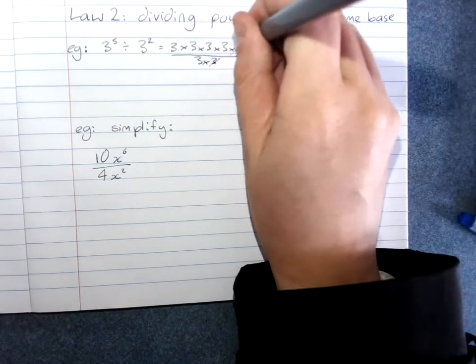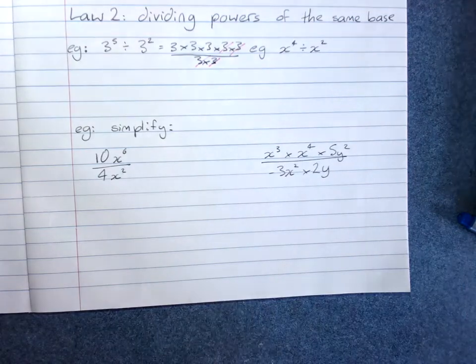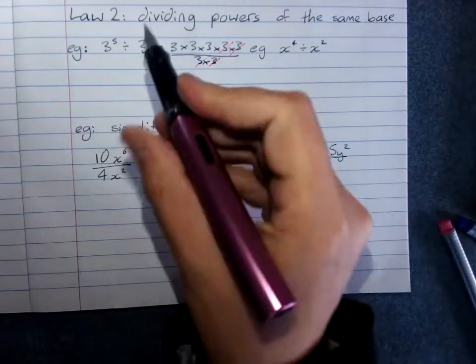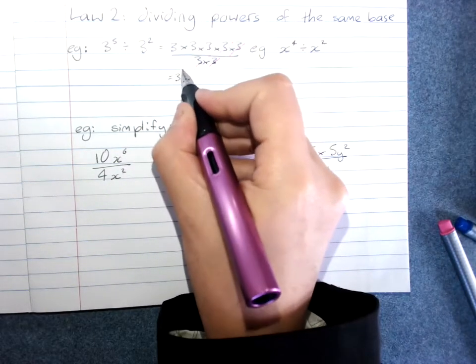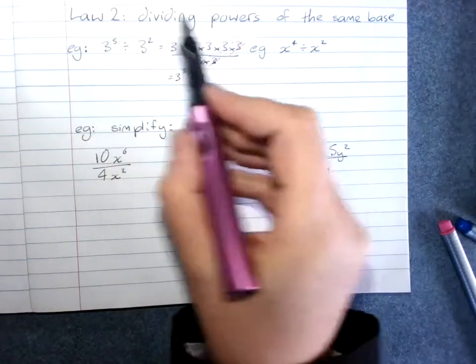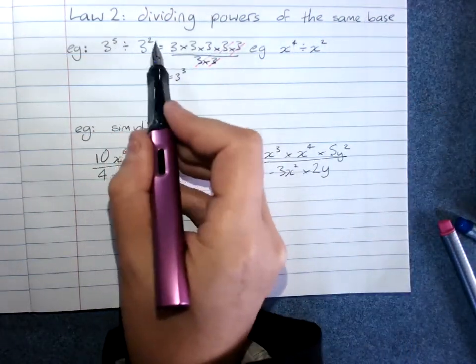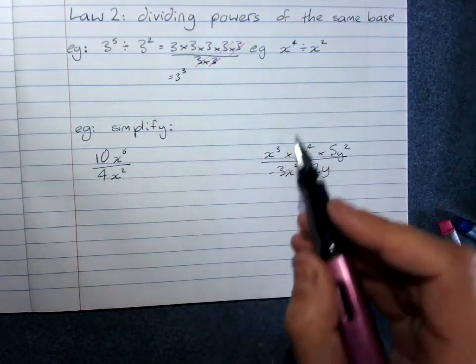So you can see that I'm left with 3 to the power of 3. The shortcut to divide powers of the same base is to subtract the products.